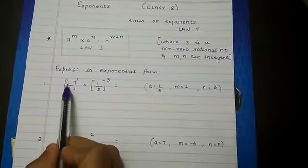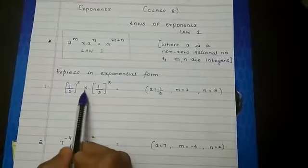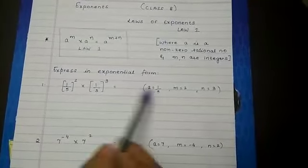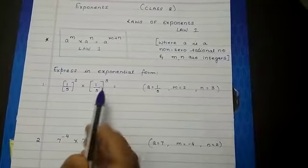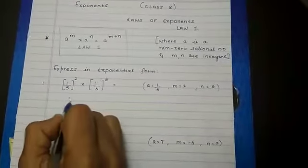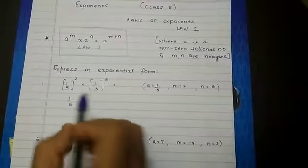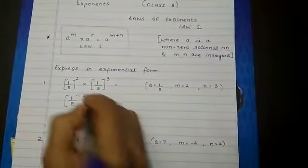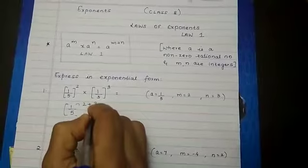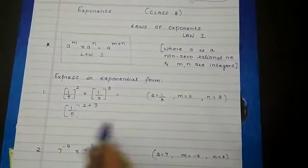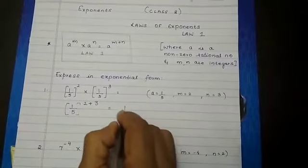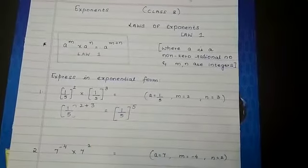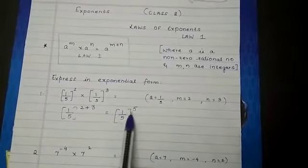Now if you see the sum, 1 by 5 raised to 2 into 1 by 5 raised to 3. So a is same, a is 1 by 5, m is 2, and n is 3. So based on the rule, a raised to, that is 1 by 5 raised to m plus n. So what is m? m is 2 plus what is n? 3. So m plus n will give you 1 by 5 raised to 5, and so we have got the exponential form.